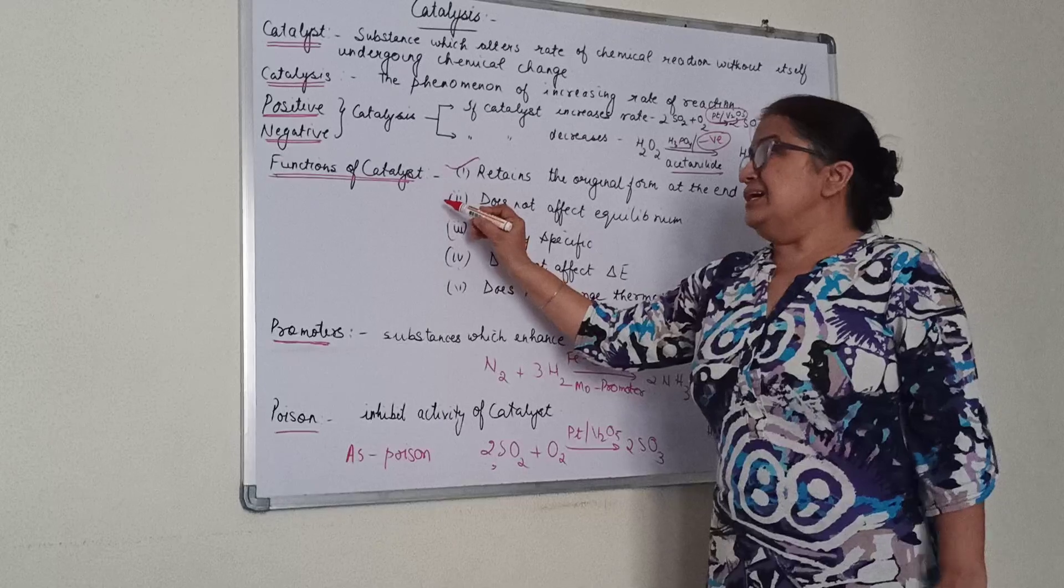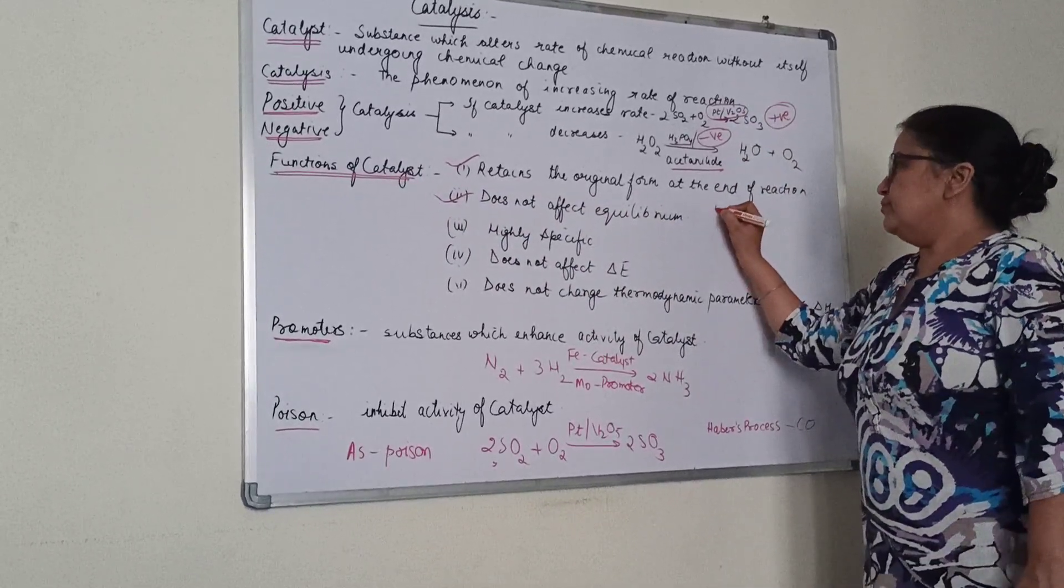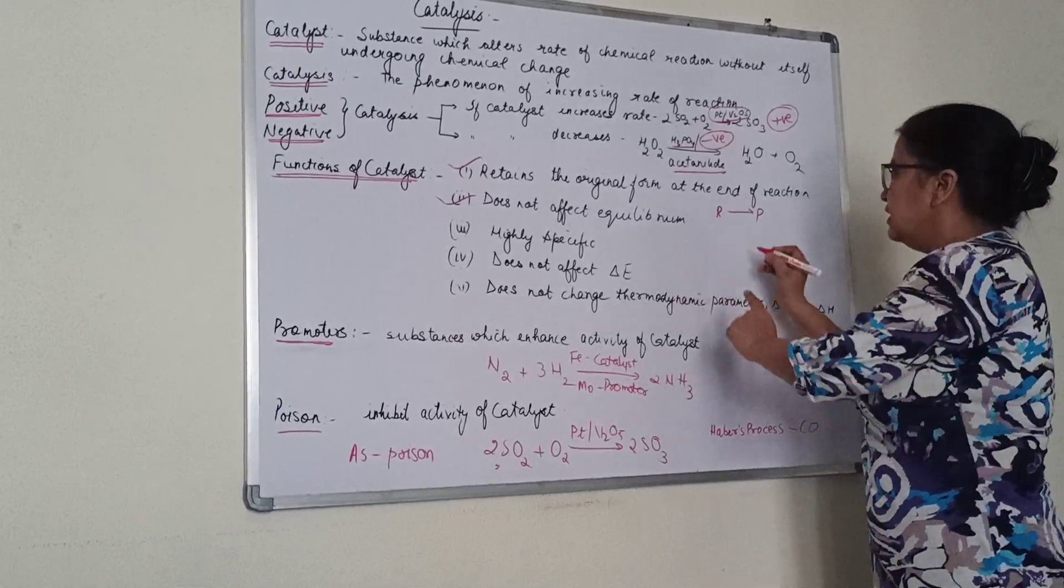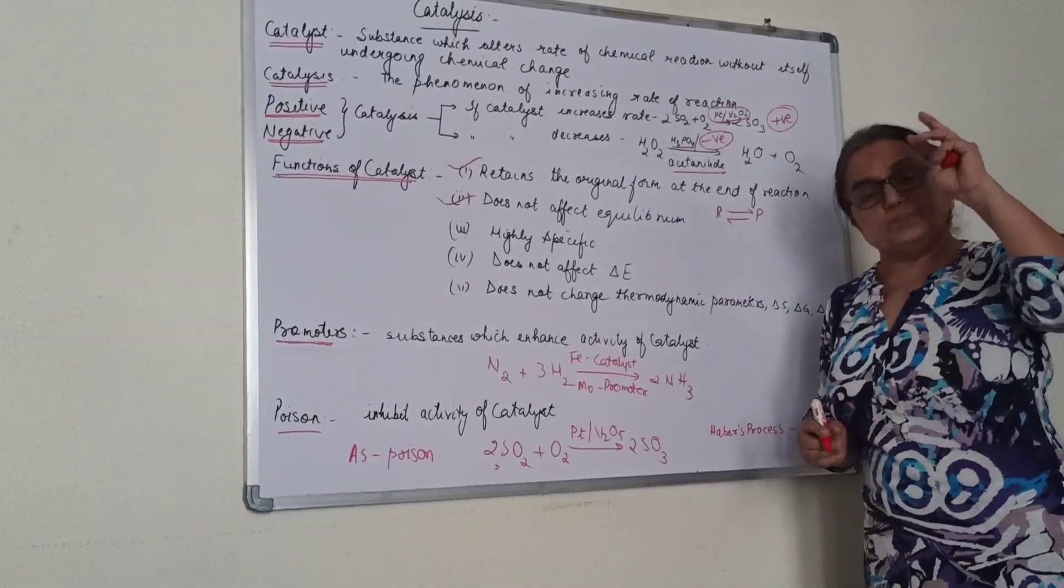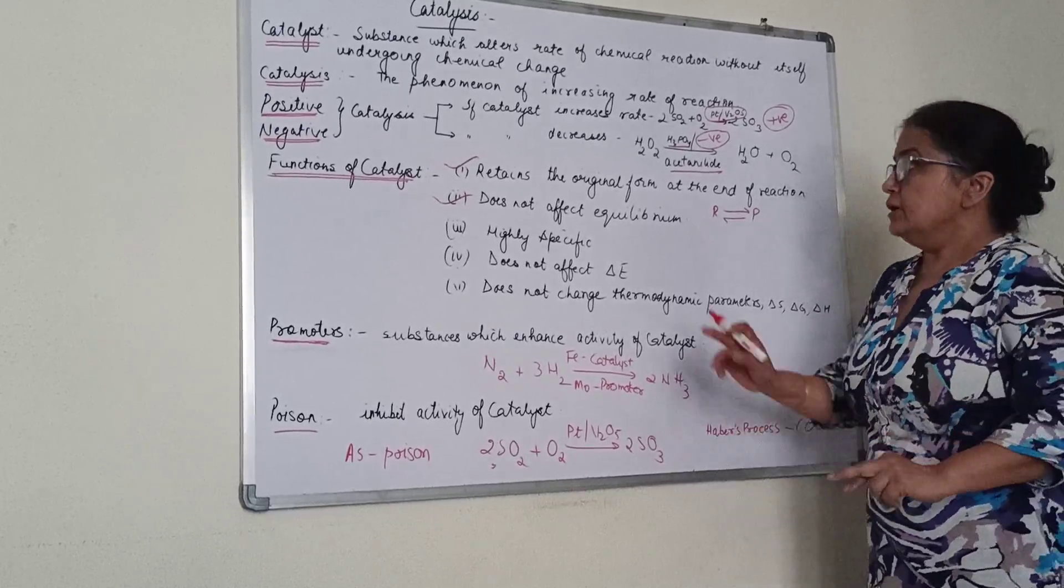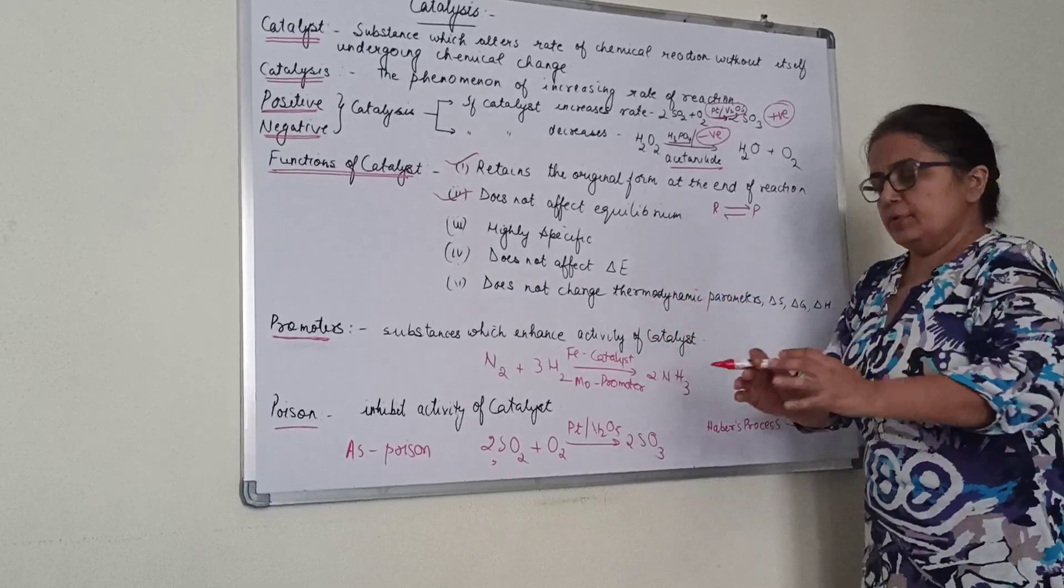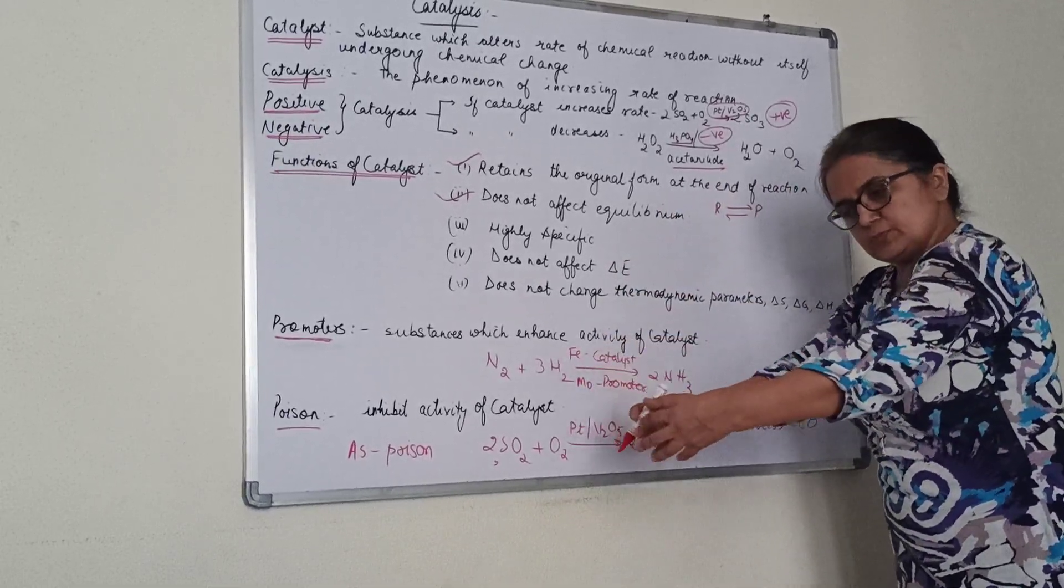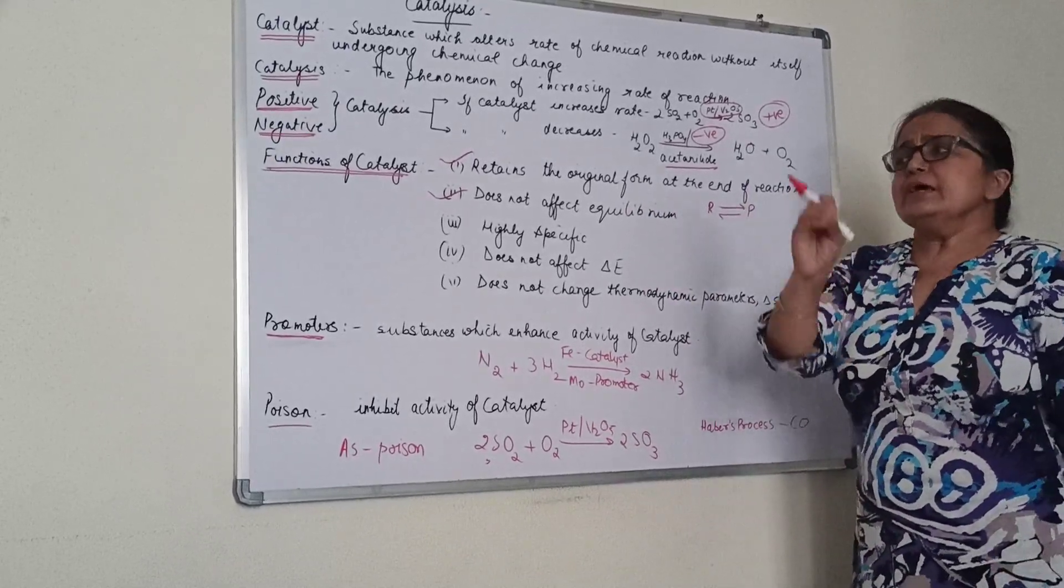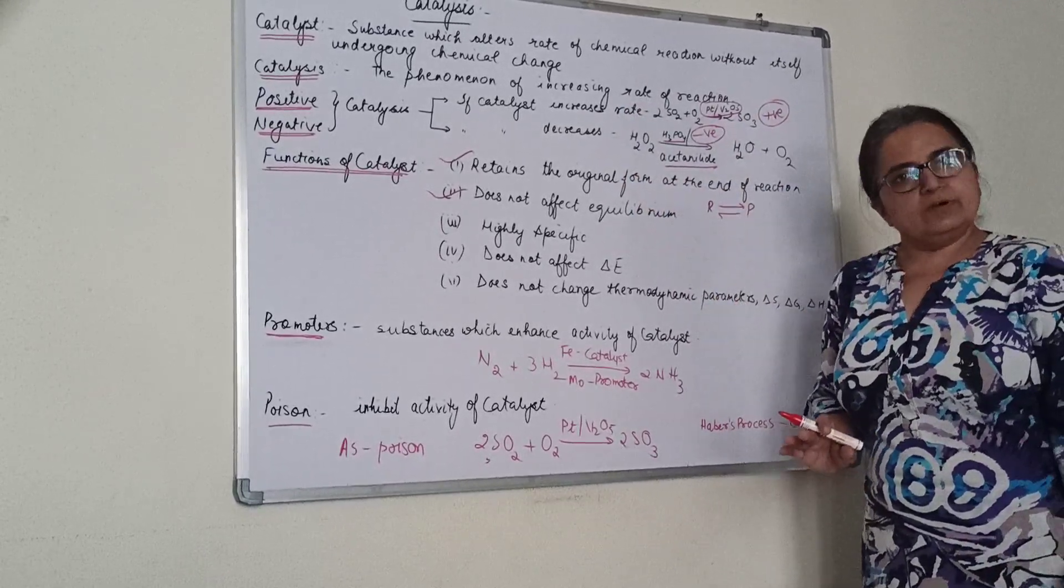Second function: it does not affect the equilibrium. Why? If a reactant is forming a product, the catalyst increases the rate of both forward and backward reactions equally. It affects both directions equally, so equilibrium is not affected. More reactants convert to products, but correspondingly more products also form reactants. The only difference is that equilibrium is achieved faster in the presence of a catalyst.